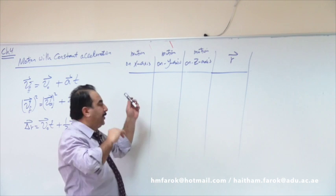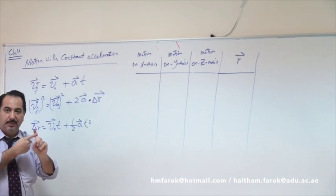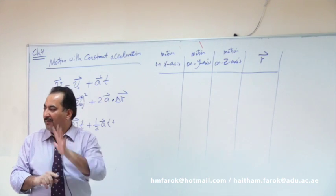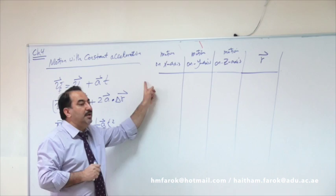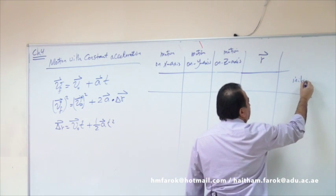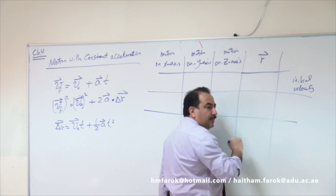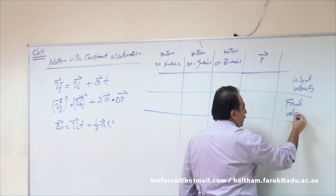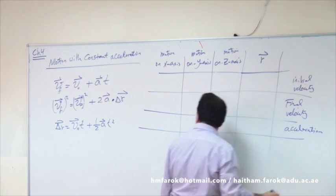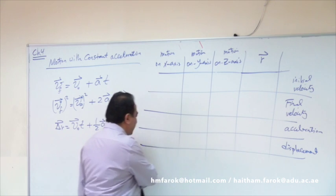Think about the terms in the equations of motion. We have: initial velocity, final velocity, acceleration, displacement, and time — so you need five rows. First row: initial velocity. Second row: final velocity. Third row: acceleration. Fourth row: displacement. And the last row is for time. Put them in this order — initial, final — it's better.